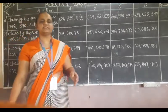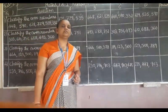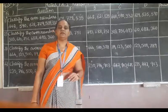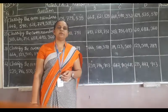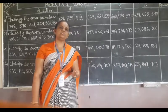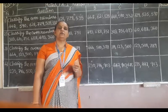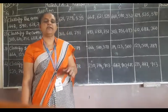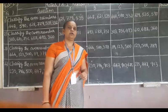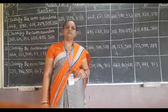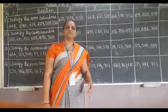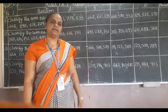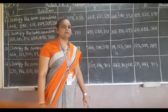In the previous exercise we learnt odd numbers. Now we will learn even numbers. Which are the odd numbers? 1, 3, 5, 7, 9 are odd numbers. And which are the even numbers? 0, 2, 4, 6 and 8 are even numbers.